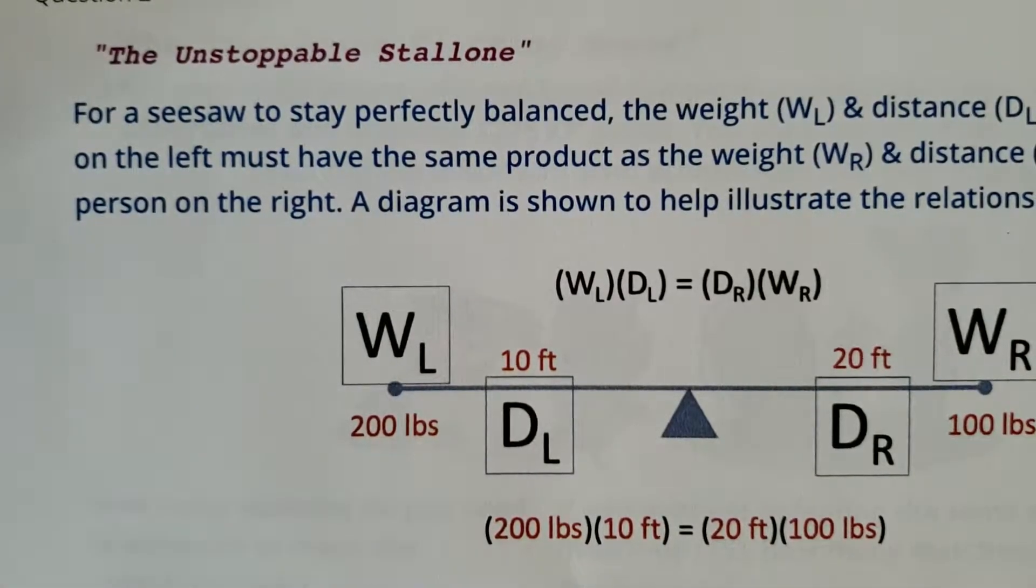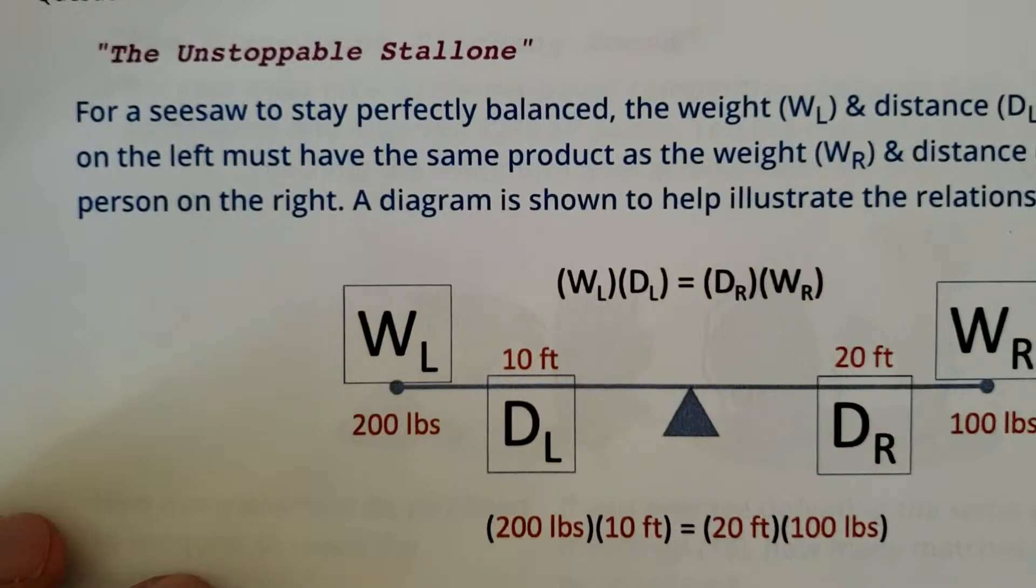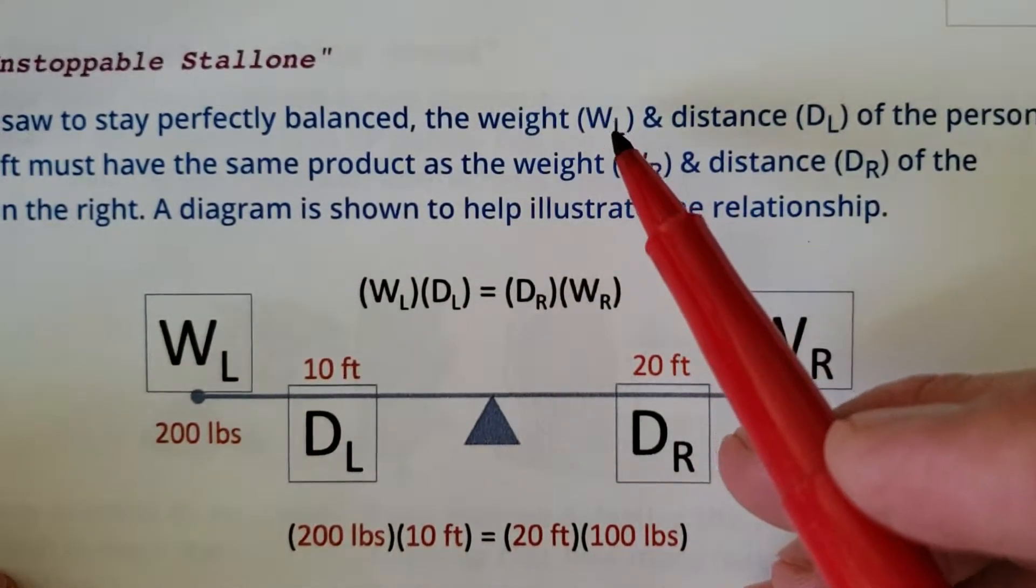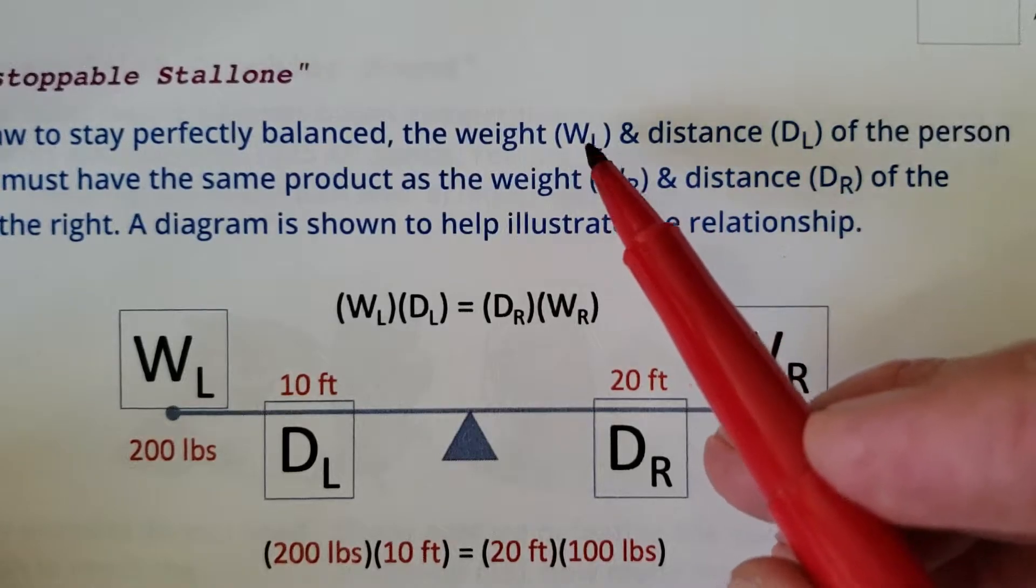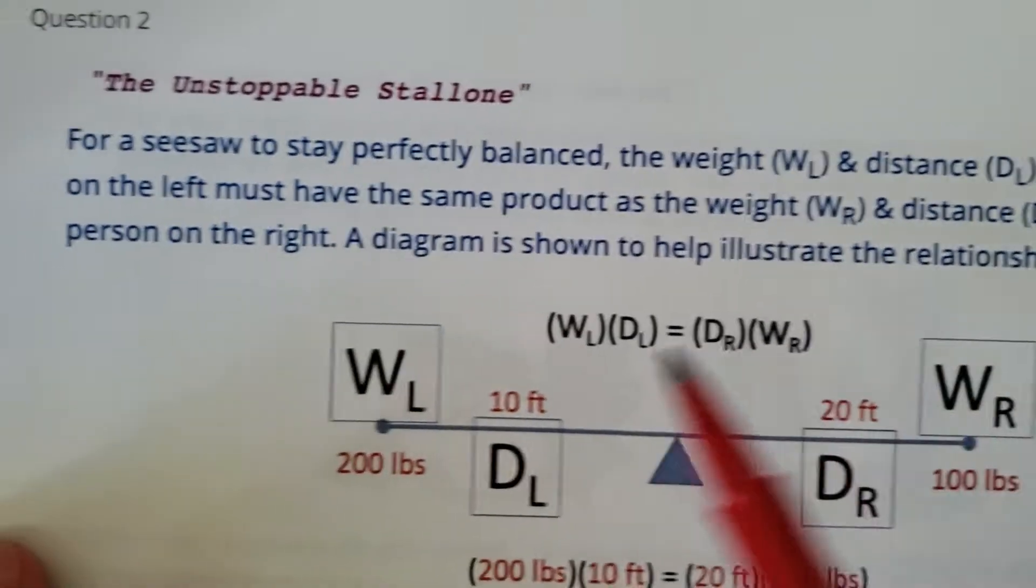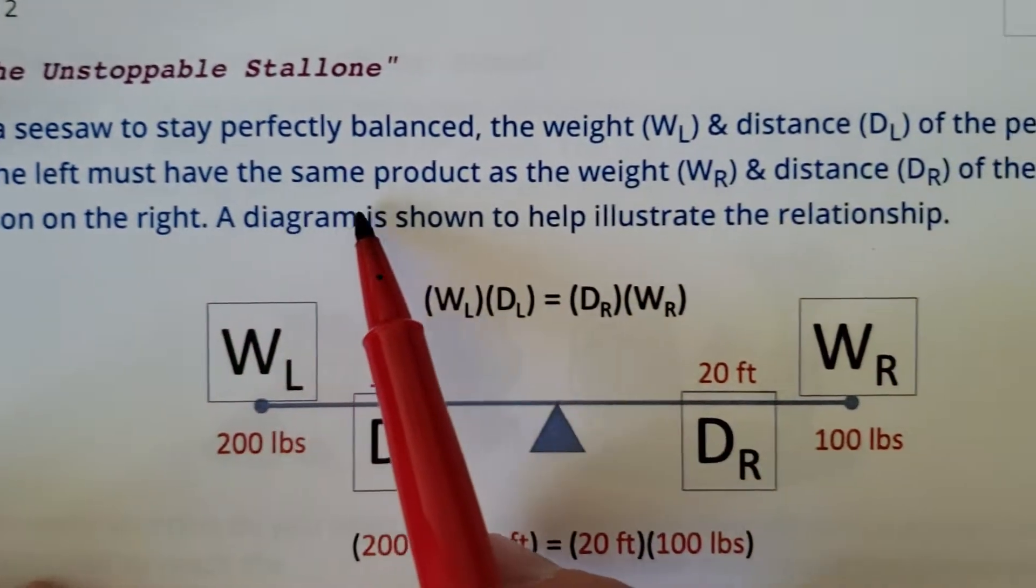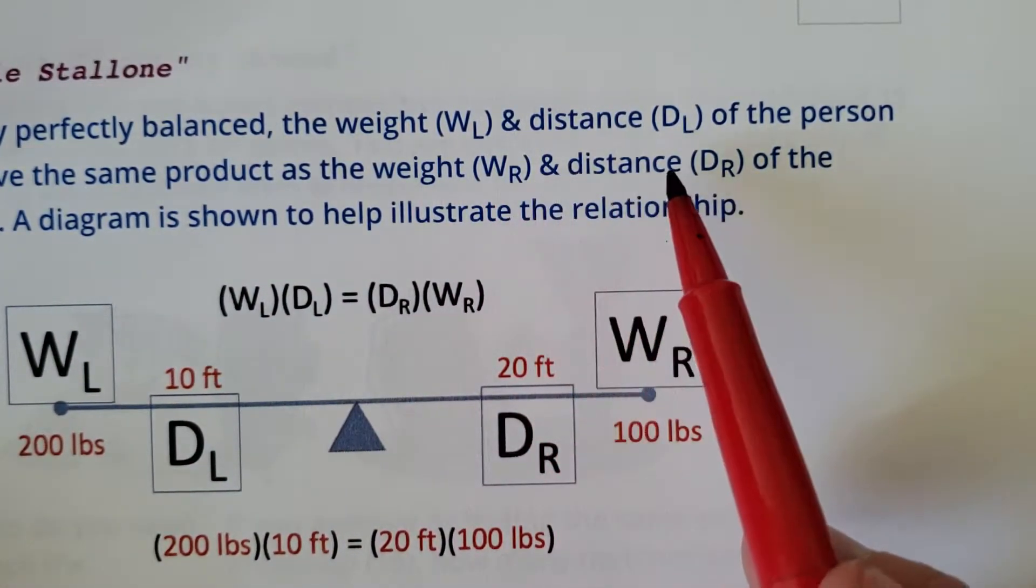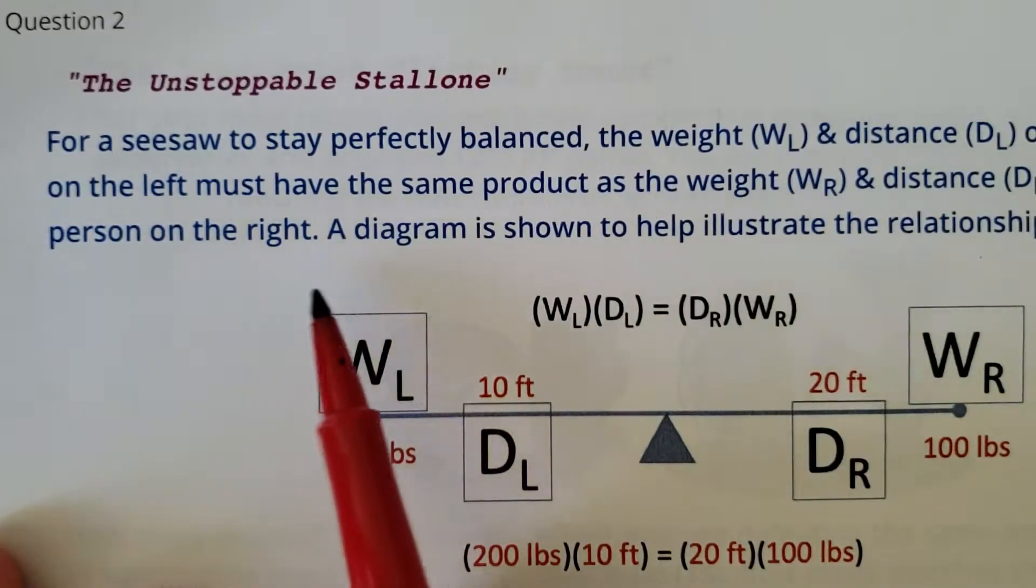All right, here's a fun one. Let's talk about proportions and seesaws. For a seesaw to stay perfectly balanced, the weight on the left side and the distance on the left side, WL times DL, of a person on the left must have the same product as the weight and distance, WR times DR, of the person on the right.